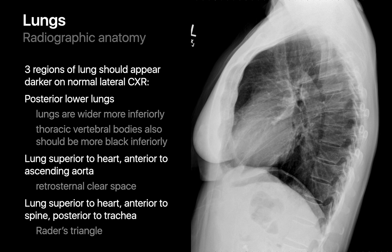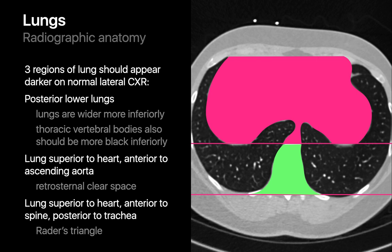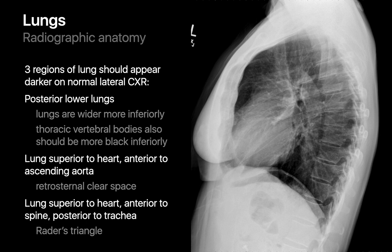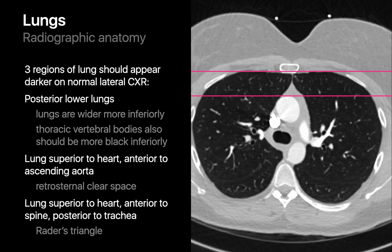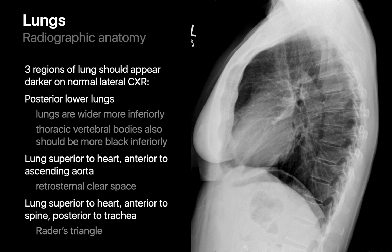Three lung regions should always appear darker than the rest of the lungs on a normal lateral chest radiograph. The first is the posterior lower lungs — x-ray photons pass through a lot of air, with the only solid structure being the spine, making this region particularly lucent. The second is the lung region superior to the heart and anterior to the ascending thoracic aorta, where the only solid structure is usually a small amount of anterior mediastinal fat — the retrosternal clear space.